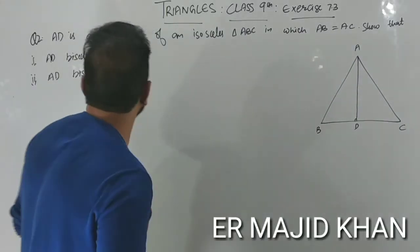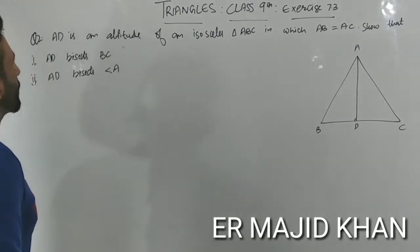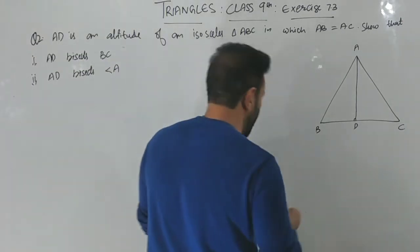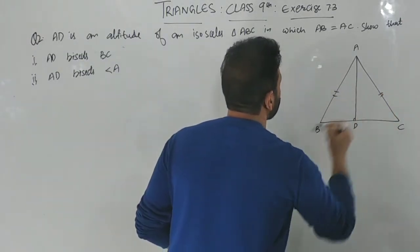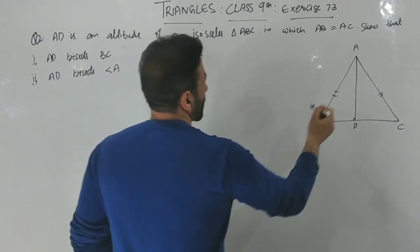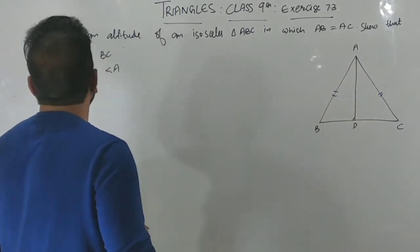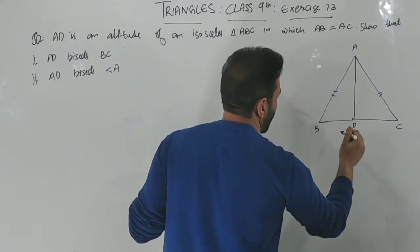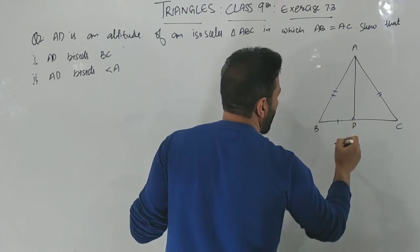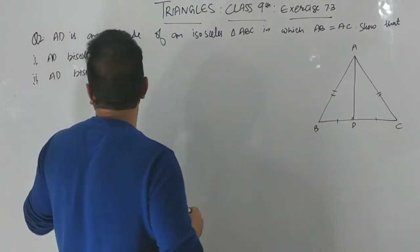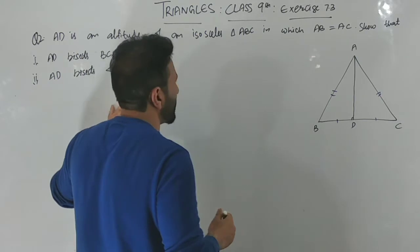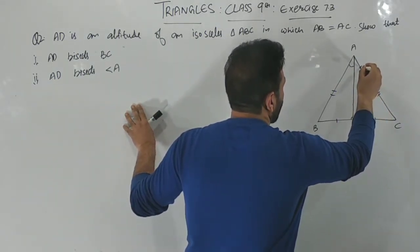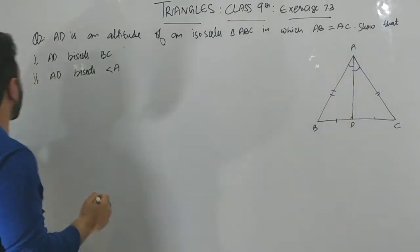Okay students, let's move to our next question. Question number two: AD is an altitude of an isosceles triangle ABC in which AB is equal to AC. We need to show that AD bisects BC, meaning BD equals DC. And the second part: AD bisects angle BAC, meaning angle BAD equals angle CAD. This is a very easy question.